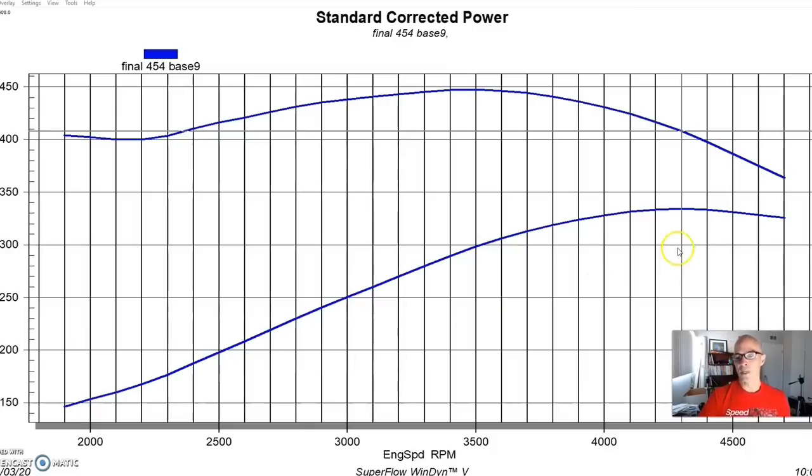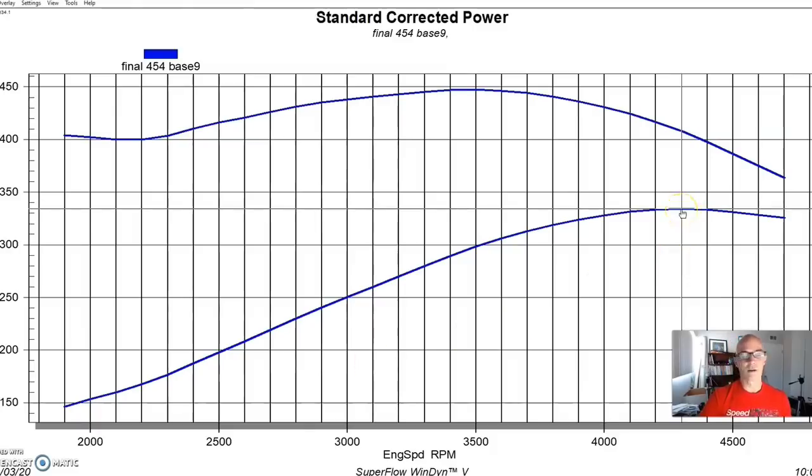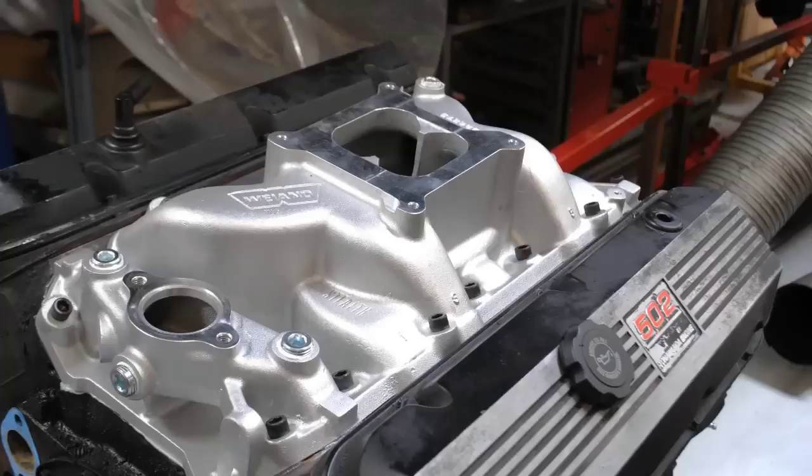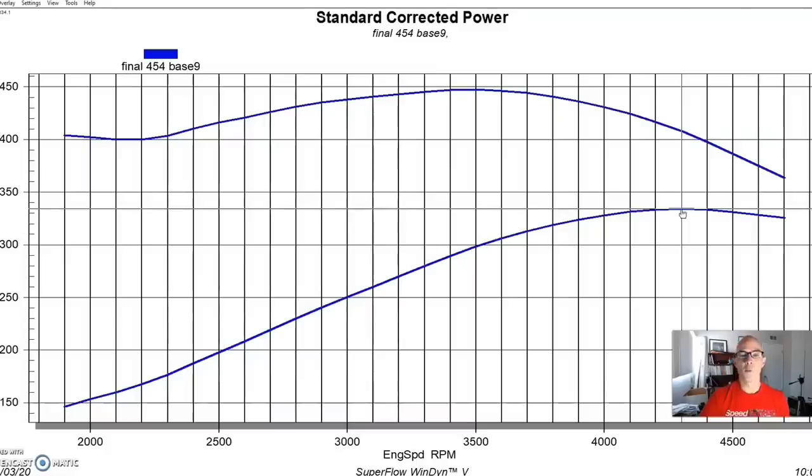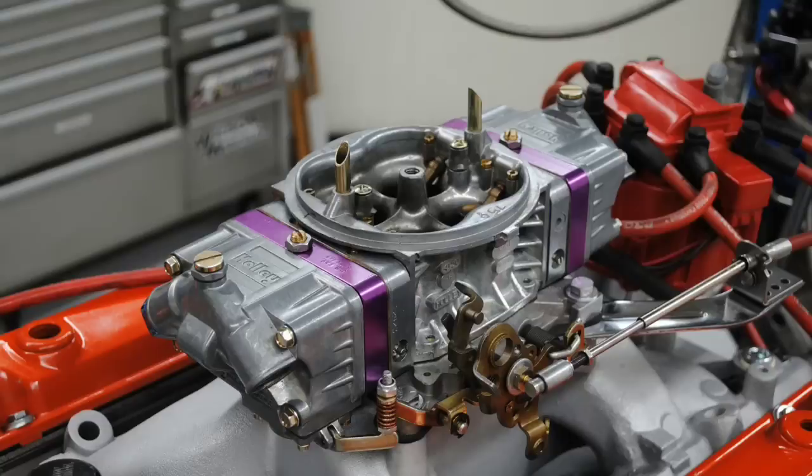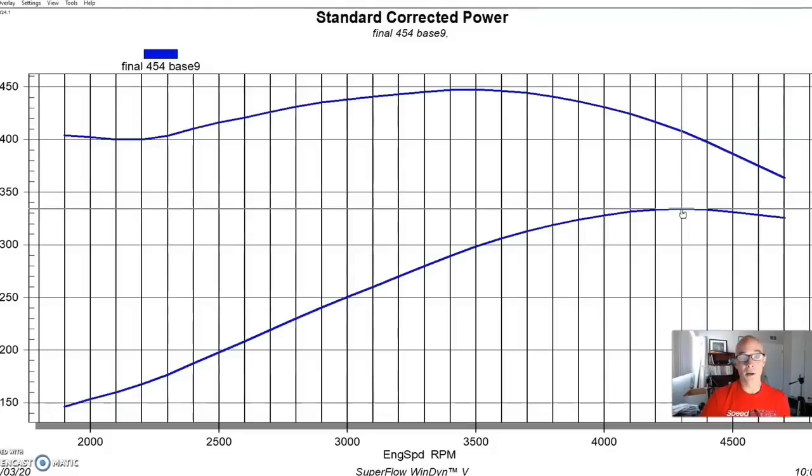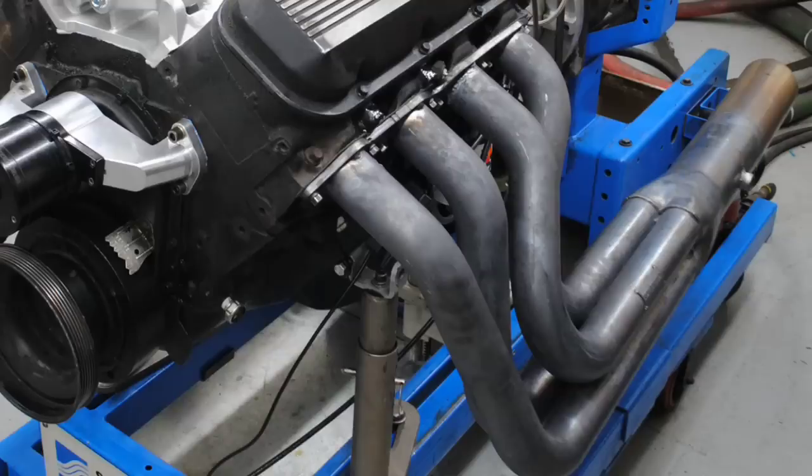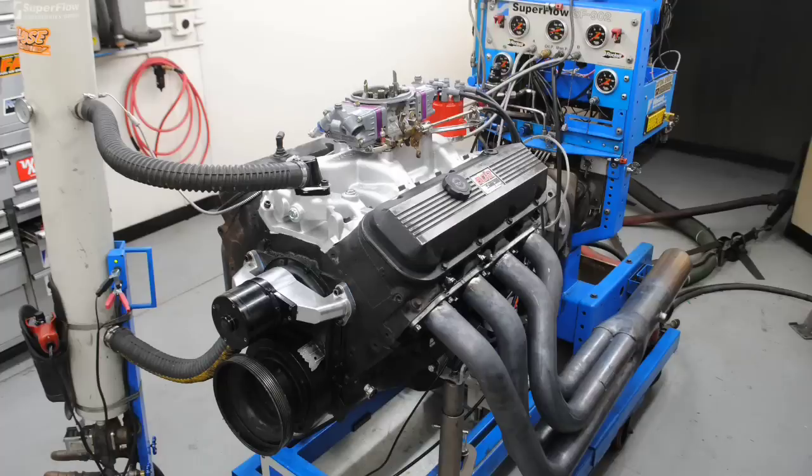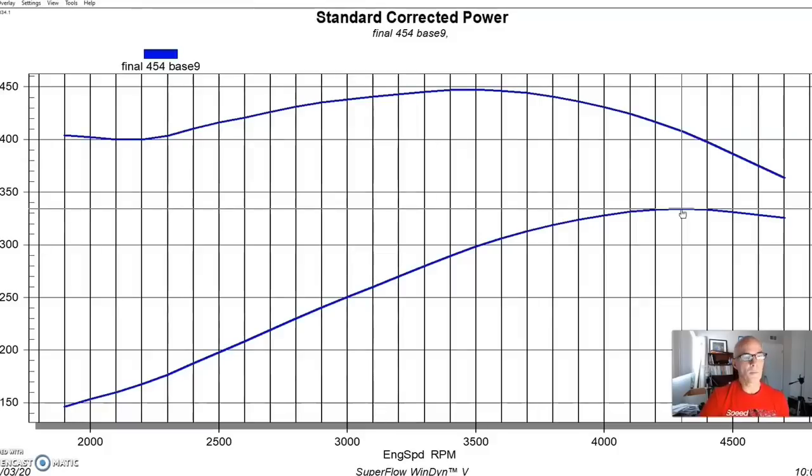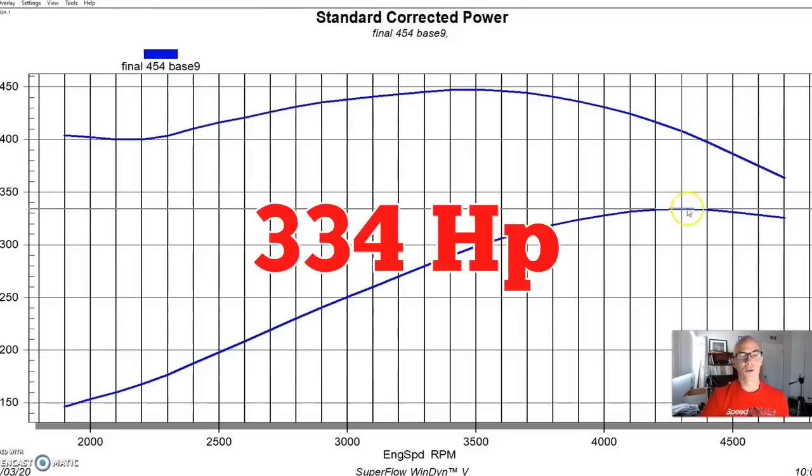To get things started, I went to the wrecking yard and picked up the 1992 junkyard 454. We took off the throttle body injection and put on a standard carbureted induction system. This was a dual plane Weiand intake, a Holley 750 carburetor, and we put in a distributor. We ran this thing with long tube headers on the engine dyno. This otherwise stock Gen 5 454 produced 334 horsepower and 448 foot-pounds of torque.